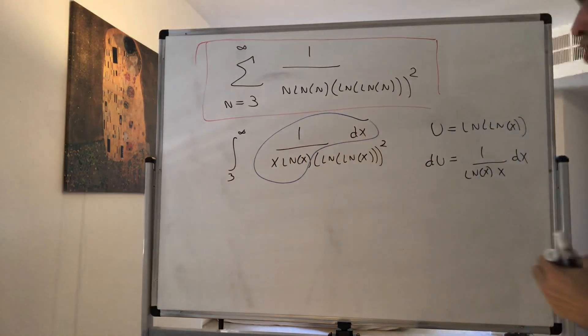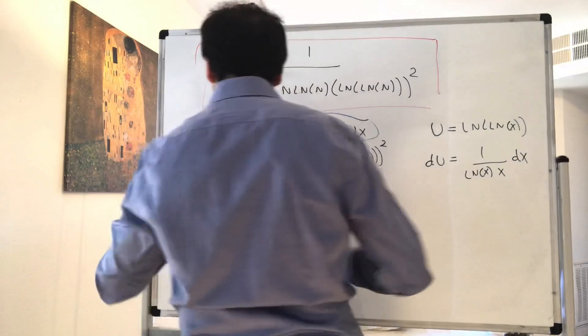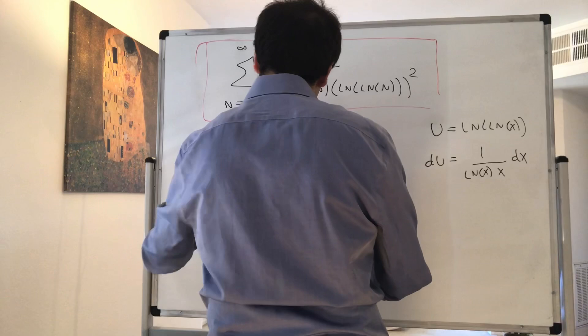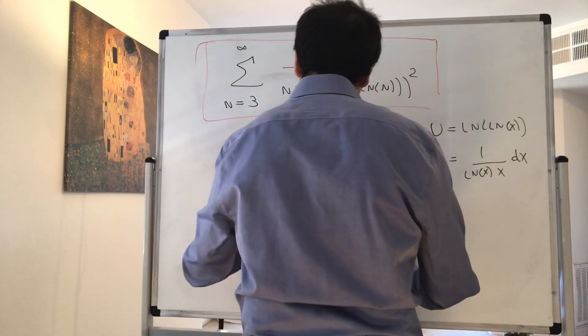So this becomes du, and then what we're left with is the integral from ln of ln of 3 to infinity of 1 over u squared du.